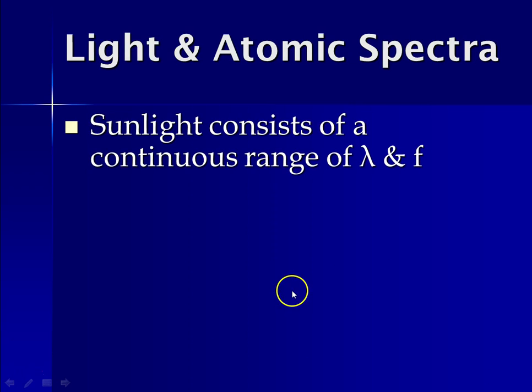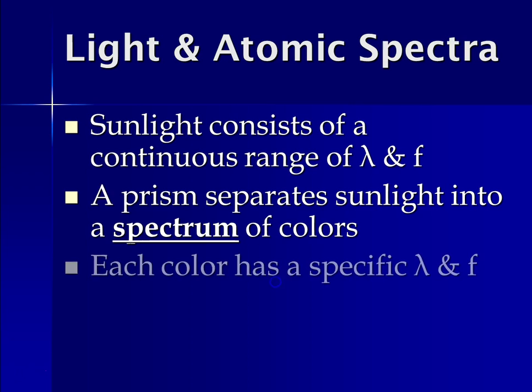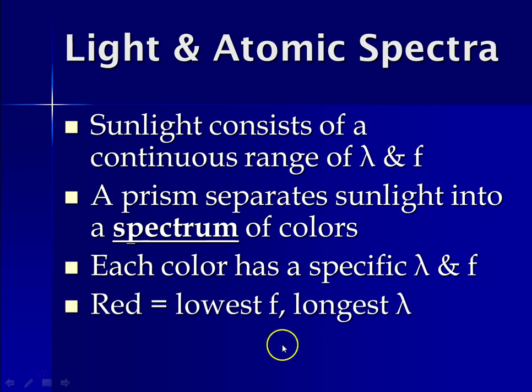So sunlight that we see every day consists of a continuous range of wavelengths and frequencies. A prism separates sunlight into a spectrum of colors. So if you've ever had a chandelier or played with a prism at the junior high, you know that you can aim light at it and you get a rainbow. And each of those colors of the rainbow has associated with it a specific wavelength and frequency. Red is the lowest frequency with the longest wavelength.